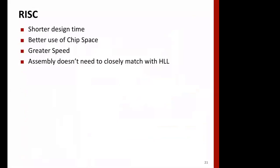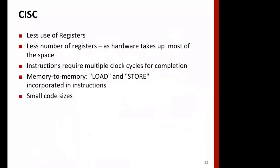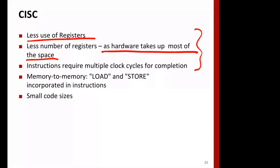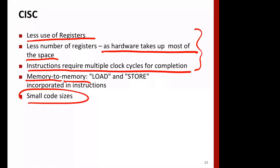Overall, RISC will require shorter design time, better use of chip space, greater speed, and assembly language need not closely match high-level language — semantic gaps are fine. CISC uses fewer registers because hardware takes up most of the space. Since CISC instructions are complex, it takes more time to decode and more time to execute; instructions may require a large number of cycles for completion and memory-to-memory instructions are present. However, CISC has the advantage of smaller code size.